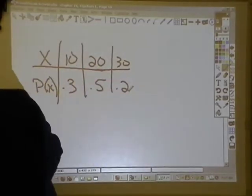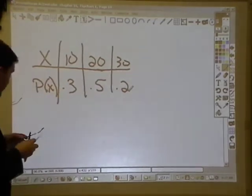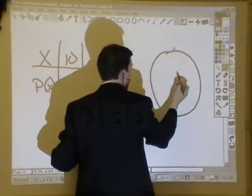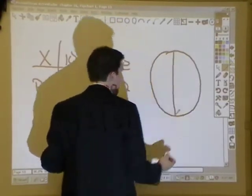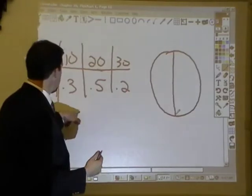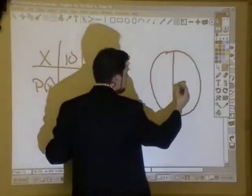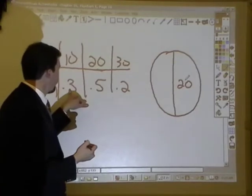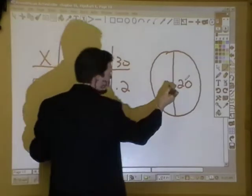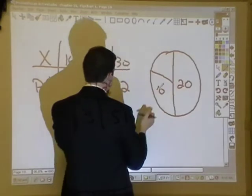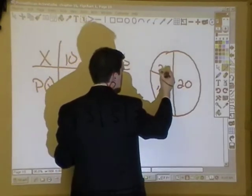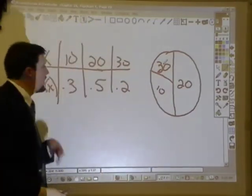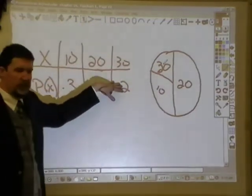So what does this really represent? Well, when we think about this, what this could represent would be like a spinner game. Here's your spinner board, and you get how many points it lands on, and 50% of this board is dominated by a score of 20. Of the other half, three-fifths are 10, so as I draw poorly, three-fifths would be 10, and the other two-fifths would be 30. You spin it, and this is the probability of getting your score.